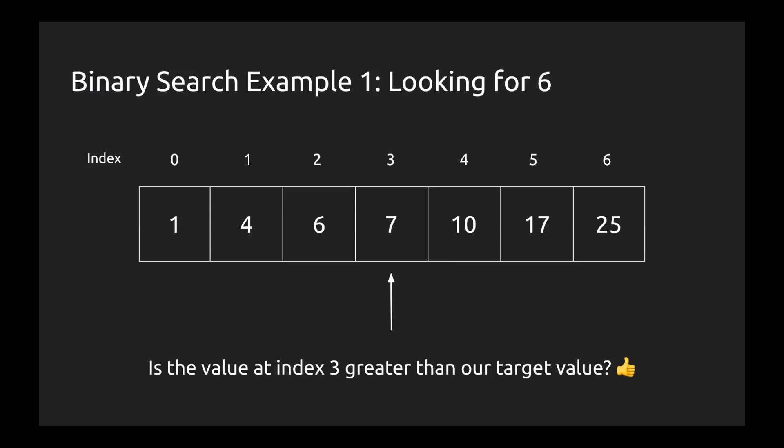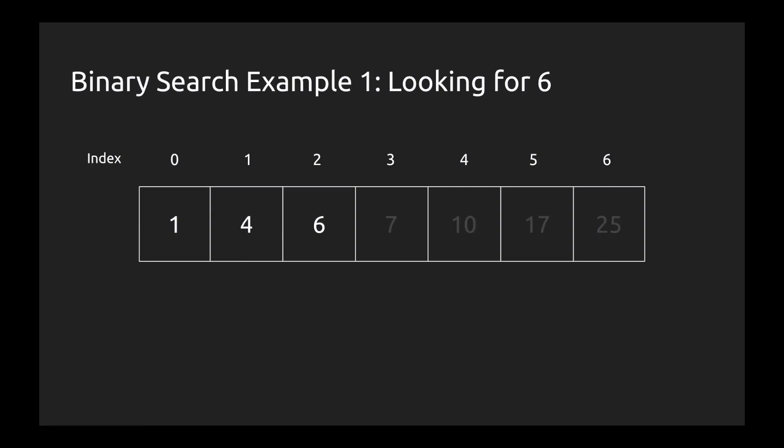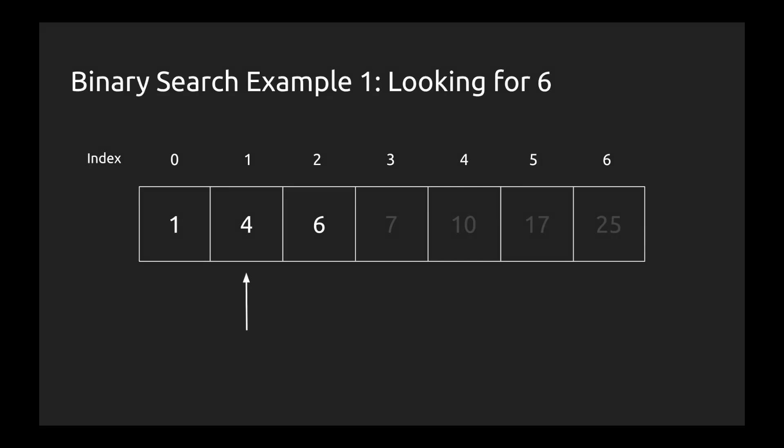But there's also another thing that we gain out of this. Because our list is sorted, we know that any index greater than index 3 — so index 4, 5, and 6 in this case — has a value greater than the value at index 3, because it's sorted in ascending order. Therefore we can not only toss out the 7, we can also toss out the 10, 17, and the 25. All of a sudden, we only have three elements left that we need to consider. We've cut the list in more than half. Now we repeat the algorithm on the remaining list, going right to index 1, which is in the middle of our remaining array.